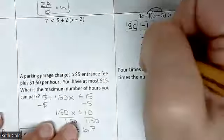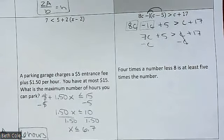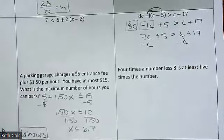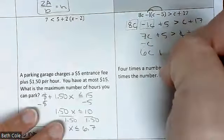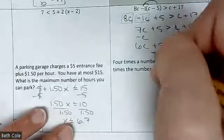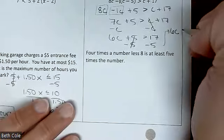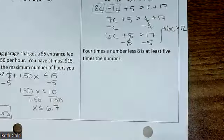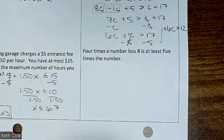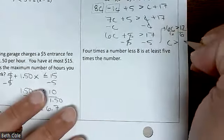And then minus c, minus c — you need to get all of the c's together. What is this going to give us? 6c. Plus 5, greater than or equal to 17. Minus 5, minus 5 — you'd have 6c greater than 12. Don't change it to an equals — c is greater than 2.